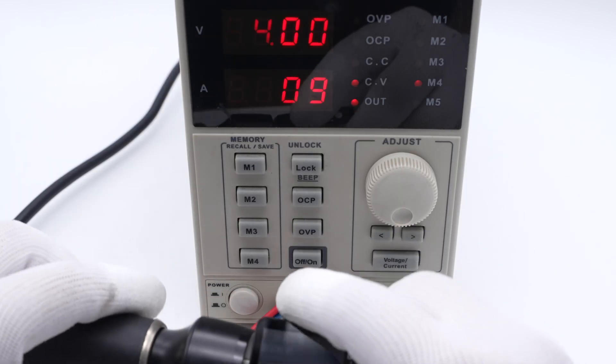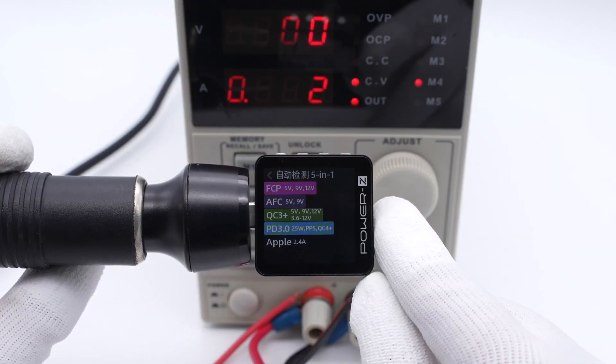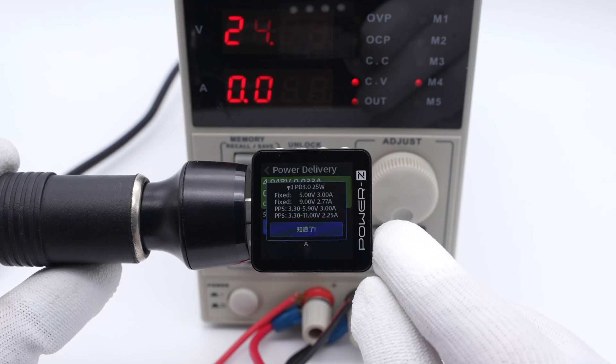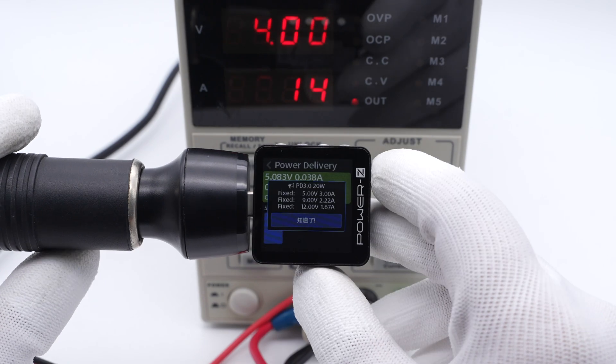Switching to 24V DC input, the supported protocols and PDO of USB-C1 are the same as those of 12V DC input. And the USB-C2 is the same thing, which means it can be used in different vehicles.